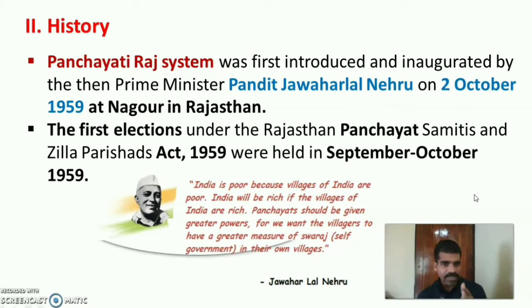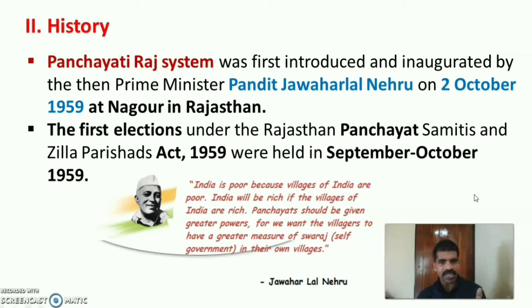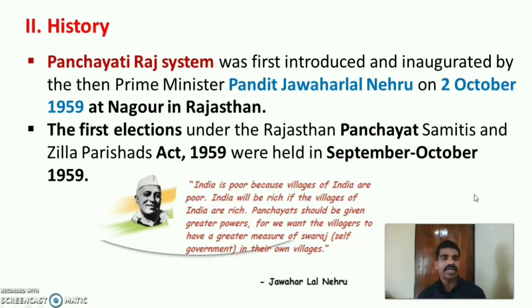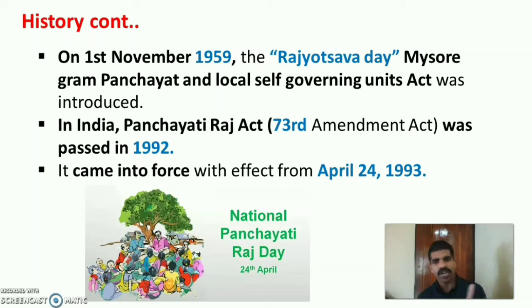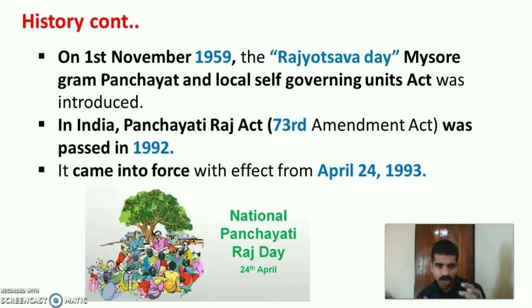History: Panjayati Raj system was first introduced and inaugurated by then Prime Minister Pandit Jawaharlal Nehru on 2nd October 1959 at Nagur in Rajasthan. The first election under the Rajasthan Panjayati Samadhis and Zilla Parishat Act 1959 were held in September and October 1959. The Mysore Gram Panjayati and Local Self-Governing Unit Act was introduced on 1st November 1959 as Rajasthan Day. In India, the Panjayati Raj Act was passed in 1952 as per the 73rd Amendment Act in the Constitution, and it came into force with effect from April 24, 1993.